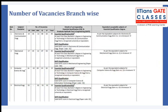Moving forward, the branch-wise vacancies: for Electronics and Communication, general category has 19 vacancies and total vacancies are 49, including EWS, OBC, and SC/ST. The essential qualification is a degree in Electronics and Communication with a valid GATE score. The GATE score is valid for three years, so if this notification was released in 2023, a GATE score from 2021 or 2022 can also be utilized.